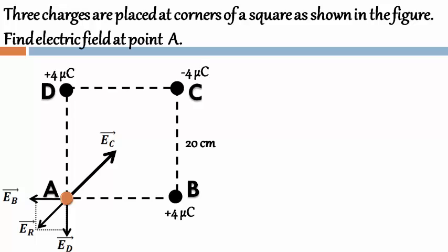Now, the given square is of 20 cm therefore the diagonal will be 20√2 cm.